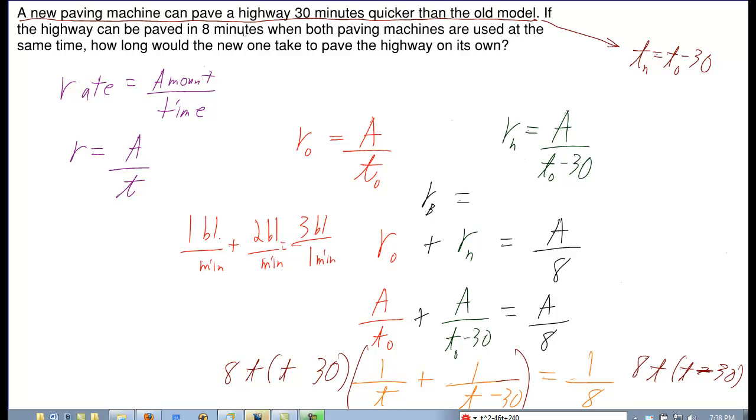If the highway can be paved in 8 minutes when both paving machines are used at the same time, how long would the new one take to pave the highway on its own?